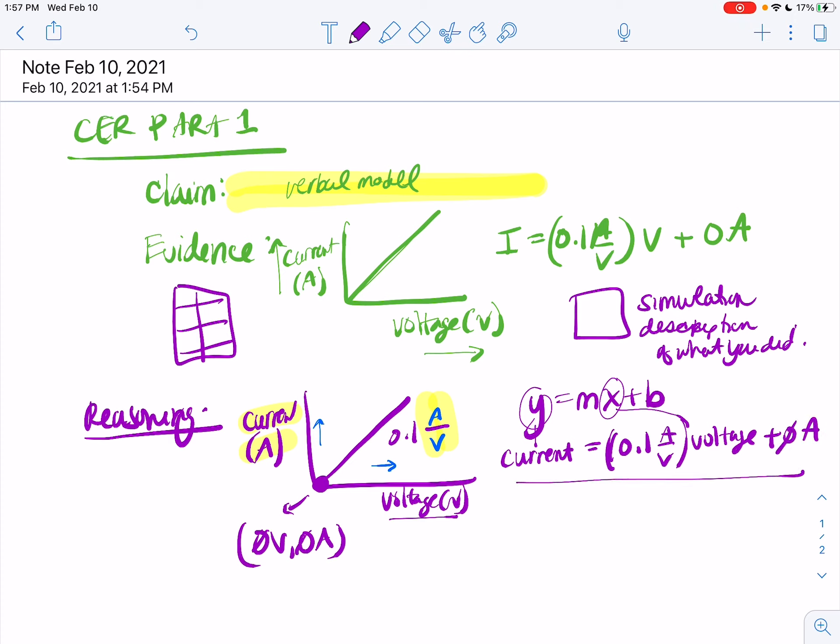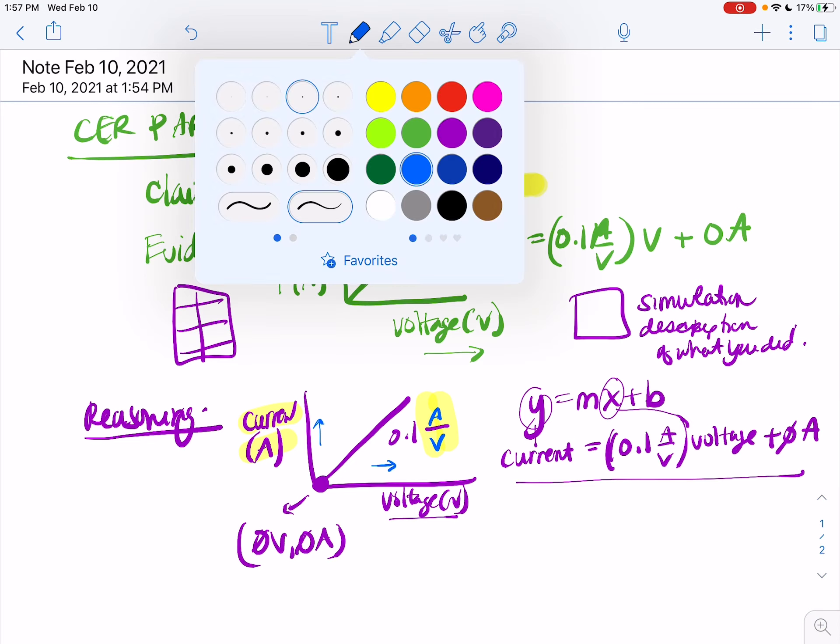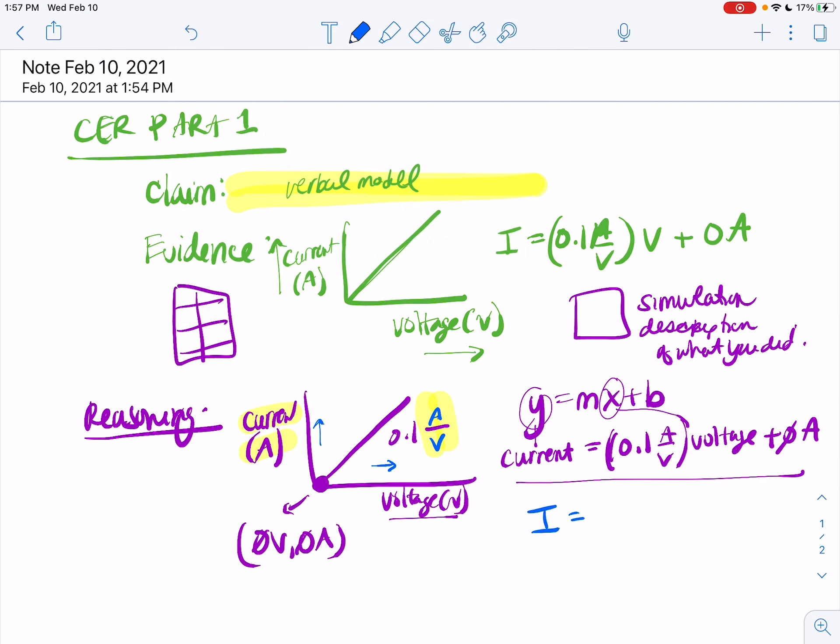So that's how you're getting that mathematical model. If you want to write it in symbols, current is I, 0.1 amps per volt, voltage is V. And you can really just leave that off because that's plus zero, who cares. So that's how you got the math model.